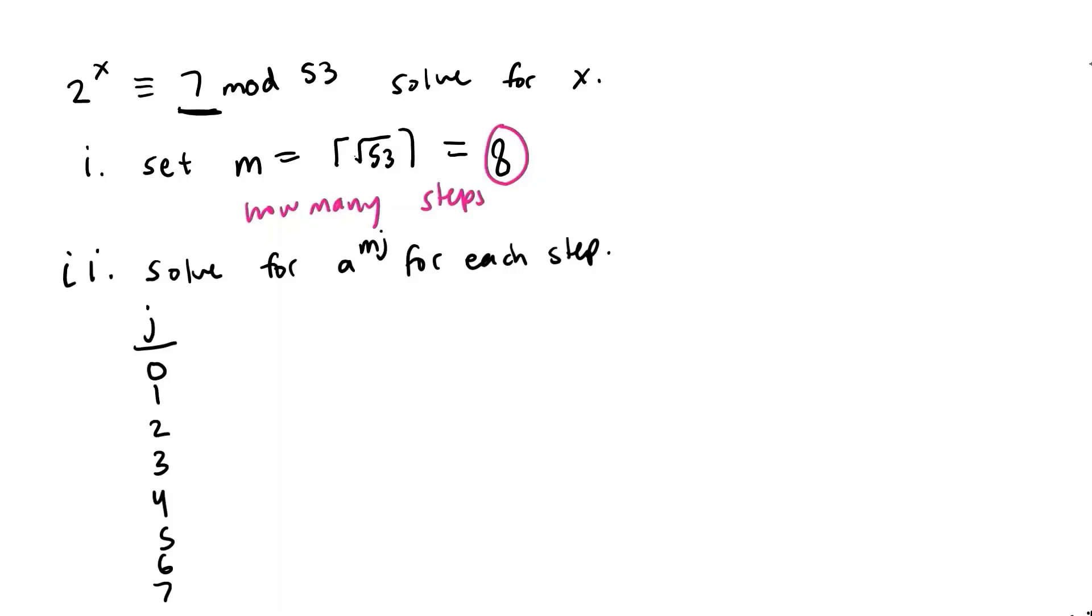Now that we have our j we want to calculate a to the mj for each of these j where m is the number 8 and j is the index that we've listed out on the left. So what was a? Remember from our congruence our general congruence that a was from a to the x congruent to g mod p.